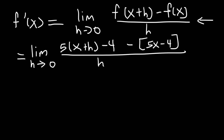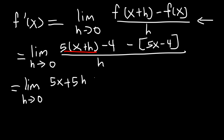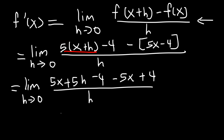Now let's simplify. First we need to distribute 5 to x plus h. Don't forget to rewrite the limit expression until you get your final answer. So it's going to be 5x plus 5h minus 4, and then distribute the negative sign, giving negative 5x plus 4, divided by h. Now 5x and negative 5x add up to 0. Negative 4 plus 4 is equal to 0.